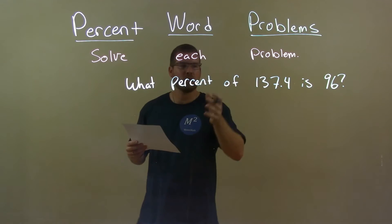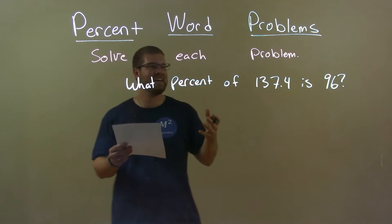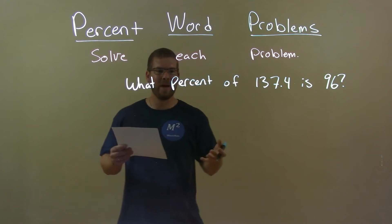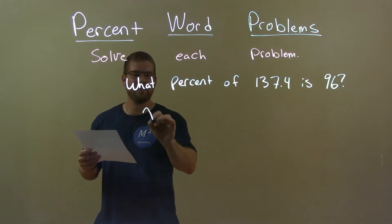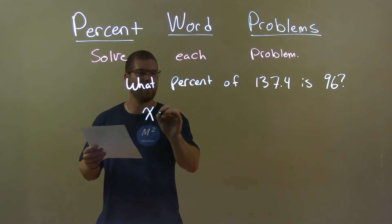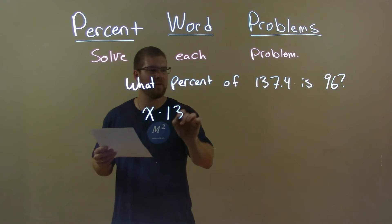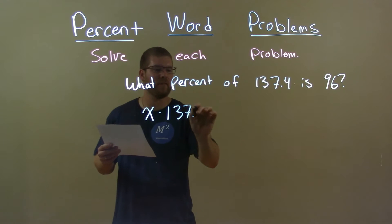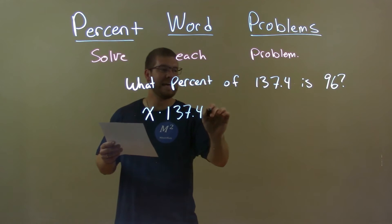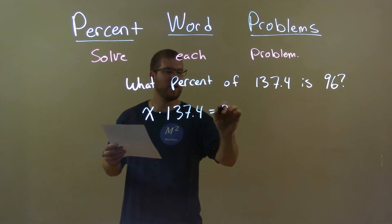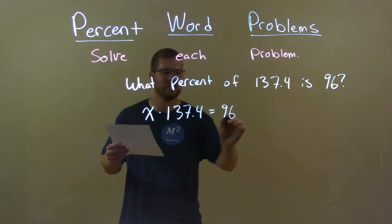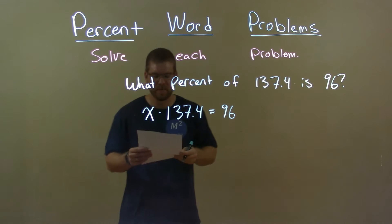So let's write this as an equation. What percent — my variable — times 137.4 is equal to 96.